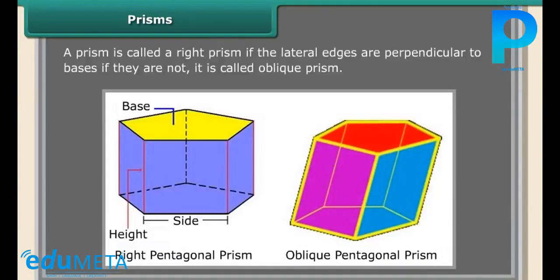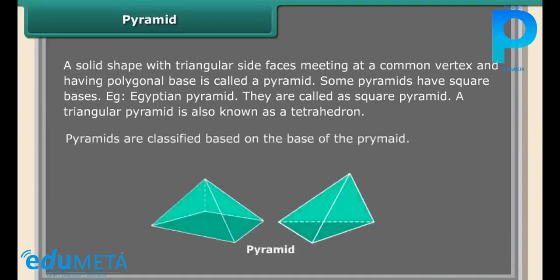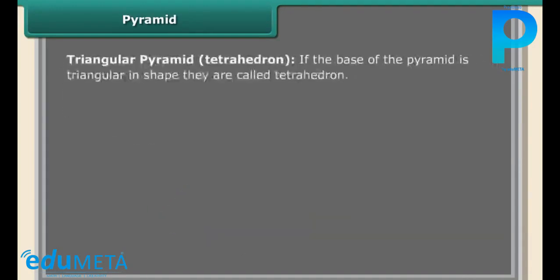Pyramid. A solid shape with triangular side faces meeting at a common vertex and having a polygonal base is called a pyramid. Some pyramids have square bases, for example, Egyptian pyramids. They are called square pyramids. A triangular pyramid is also known as a tetrahedron. Pyramids are classified based on the base of the pyramid.